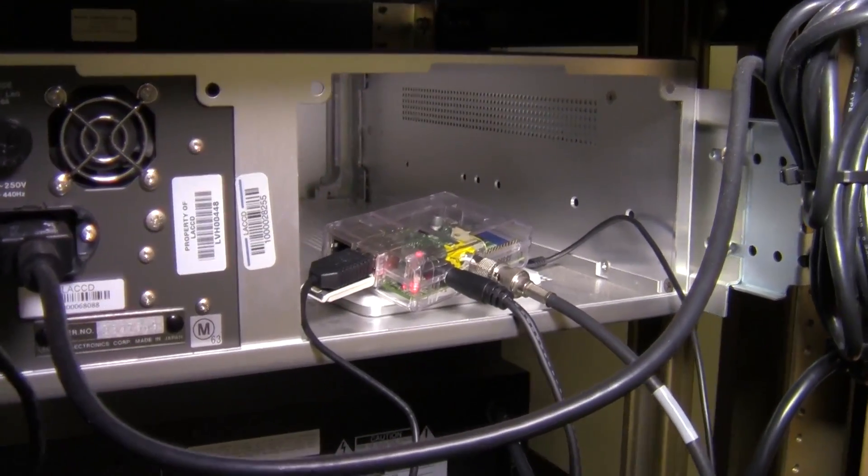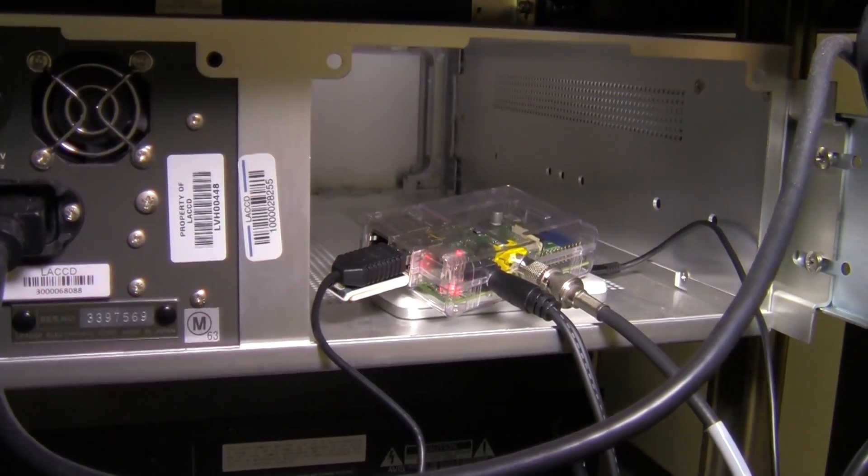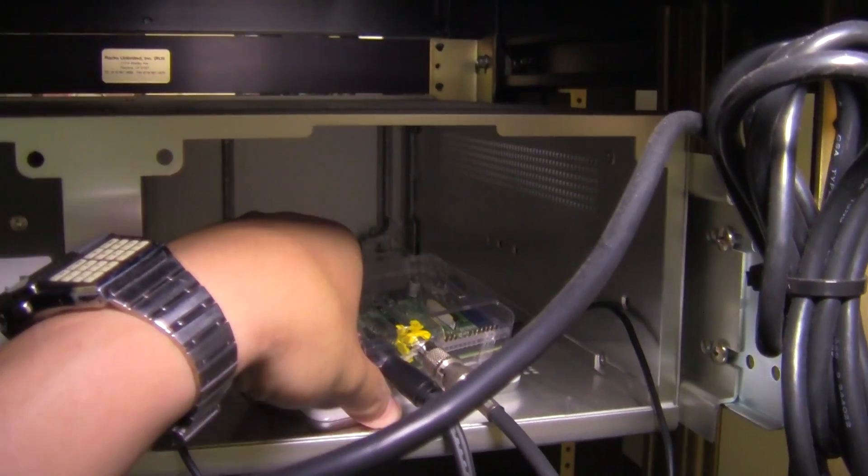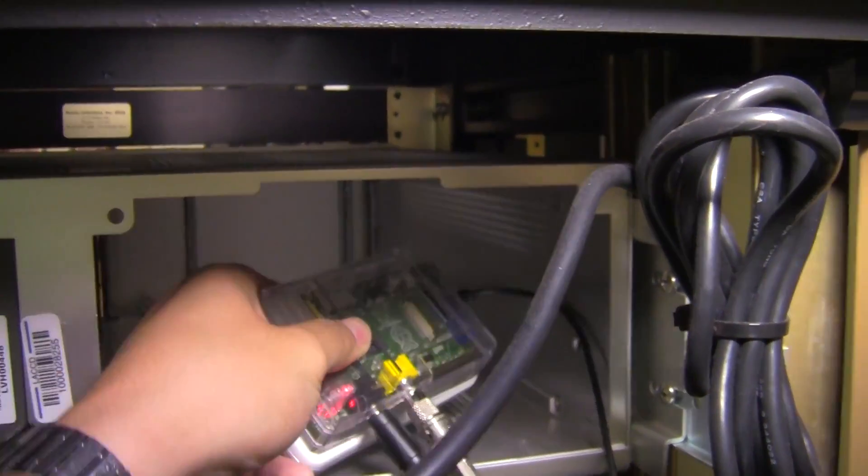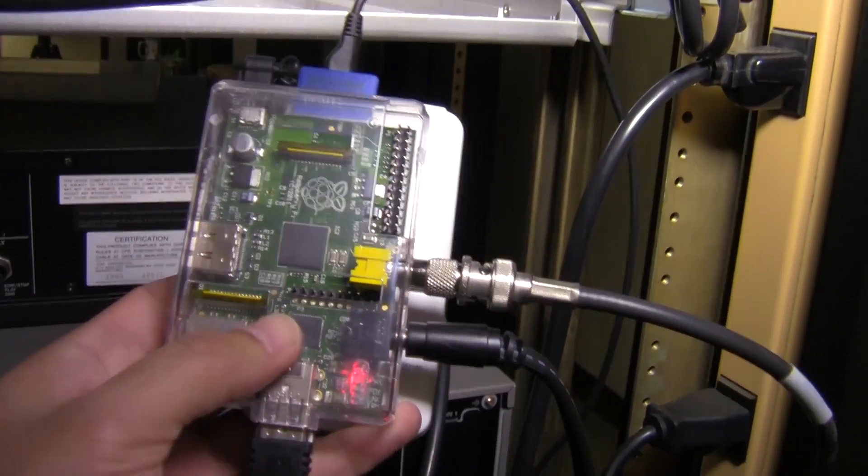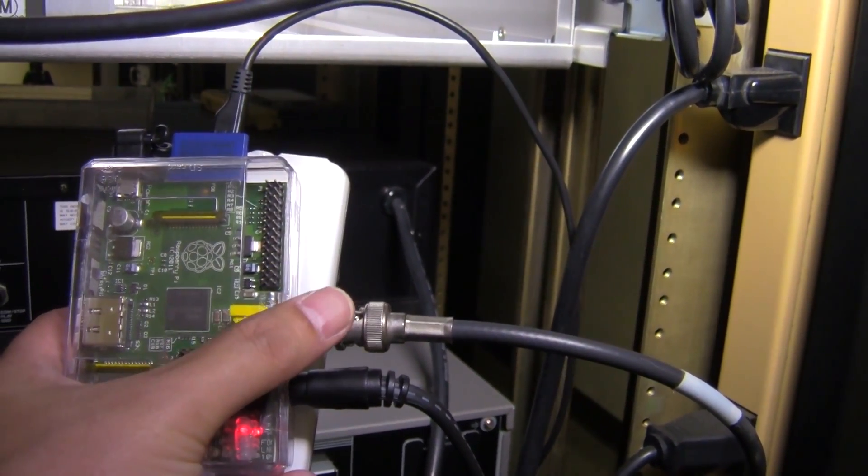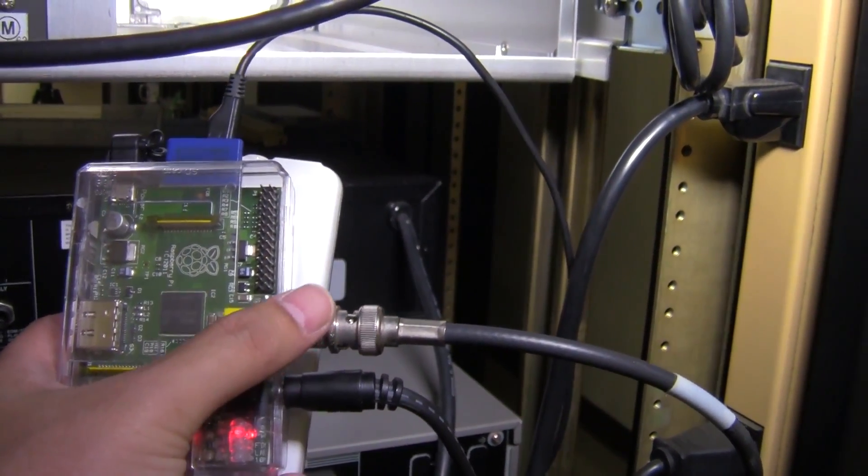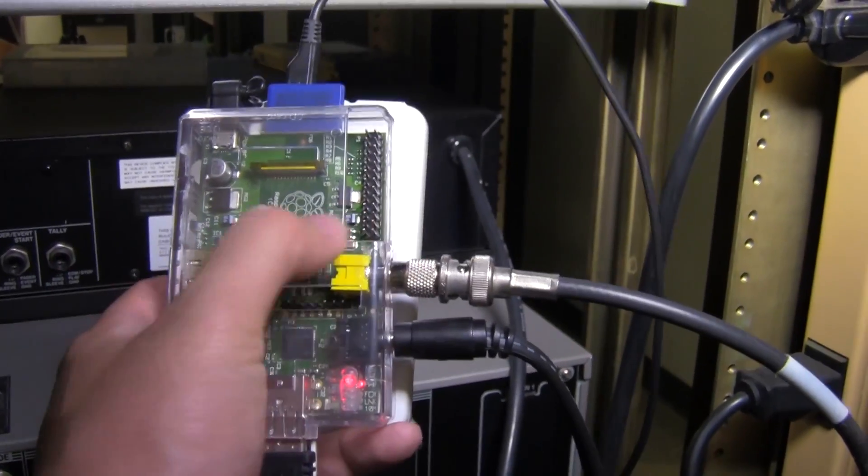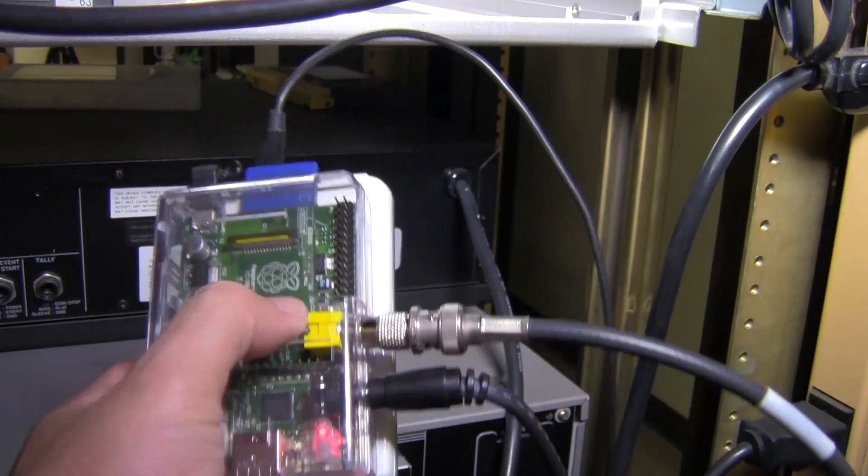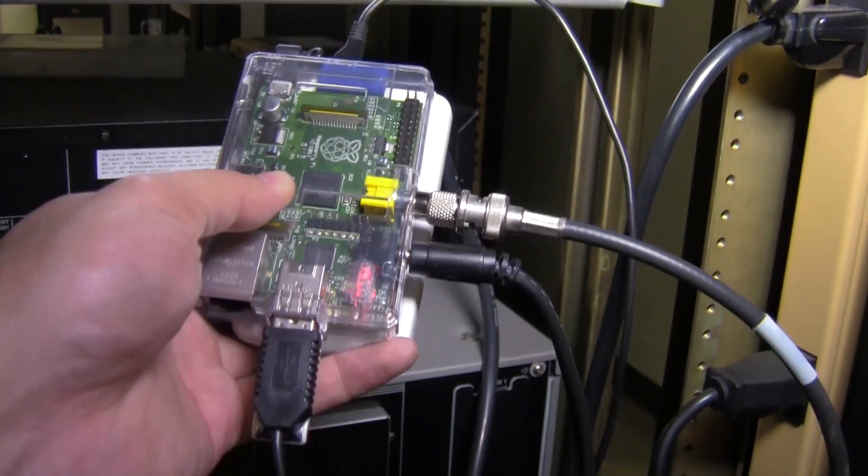All right, so here we are in the back of the system here and this is the raspberry pi that I've got going on. I'll just show you what I have plugged in here. Right here is where we have the RCA out to the BNC. That's pretty much the cable and system that they have been using. I have an adapter that converts the RCA to a BNC connection.